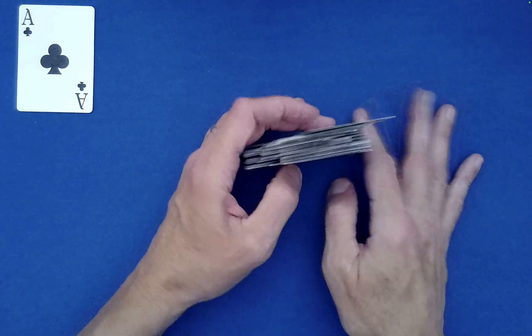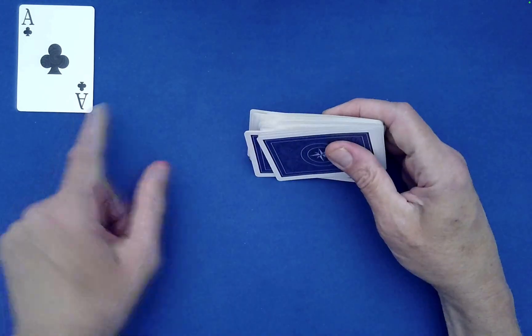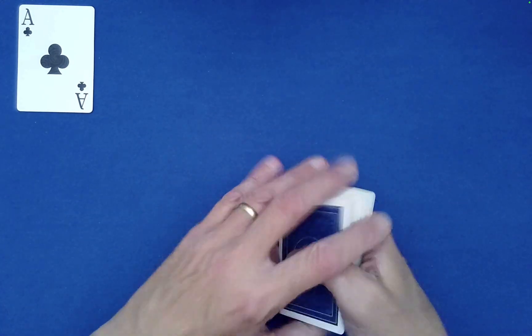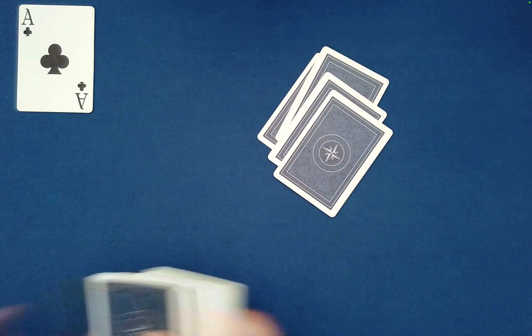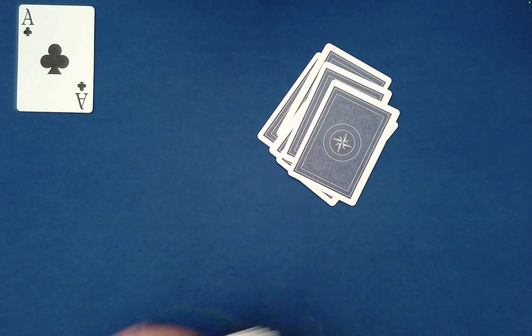So for this you need the ace of clubs, which we have over here, and then you need six random cards. I'll take from different parts: four, five, six. You can have a spectator actually choose those and mix them thoroughly.